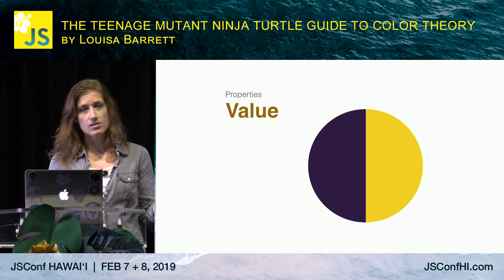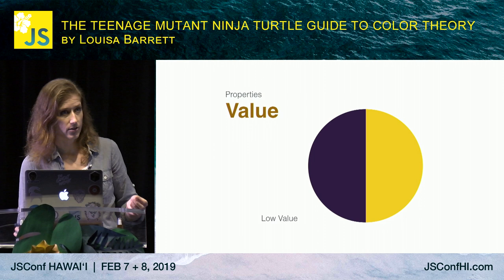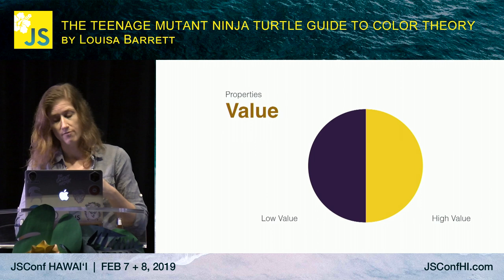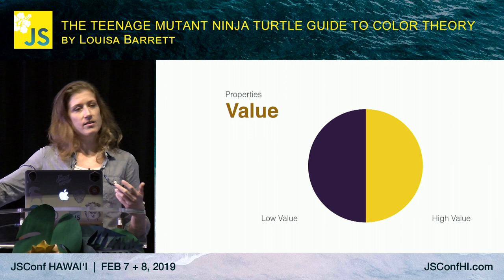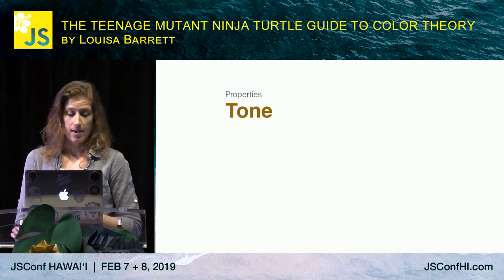Then we have value. Value describes the lightness or darkness of a color and has to do with how much light that color is allowing to reflect back into your eye. A really dark color has a low value because it's absorbing more light than it's reflecting. A high value means it's a light color, reflecting more light back into your eye. So we have hue — the pure tone — and value — the lightness or darkness.